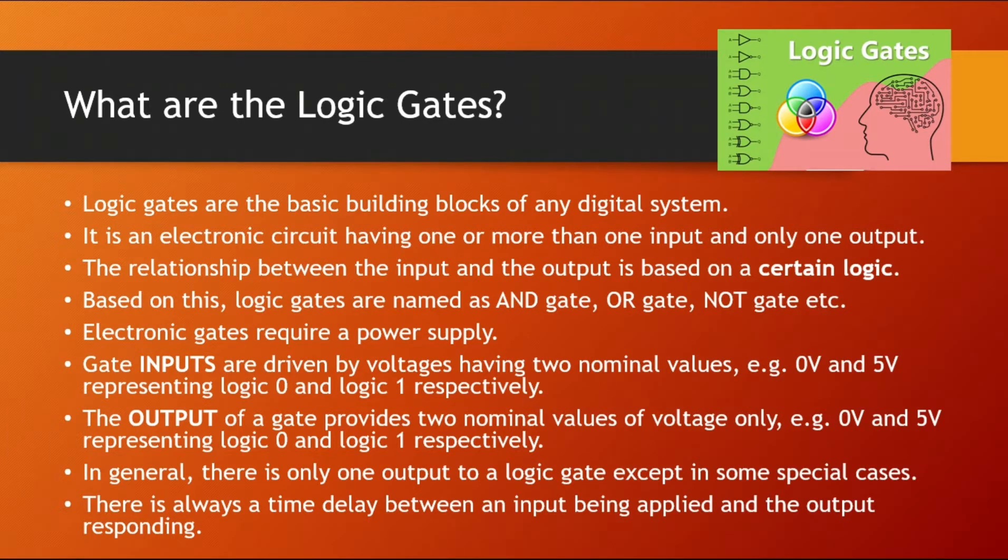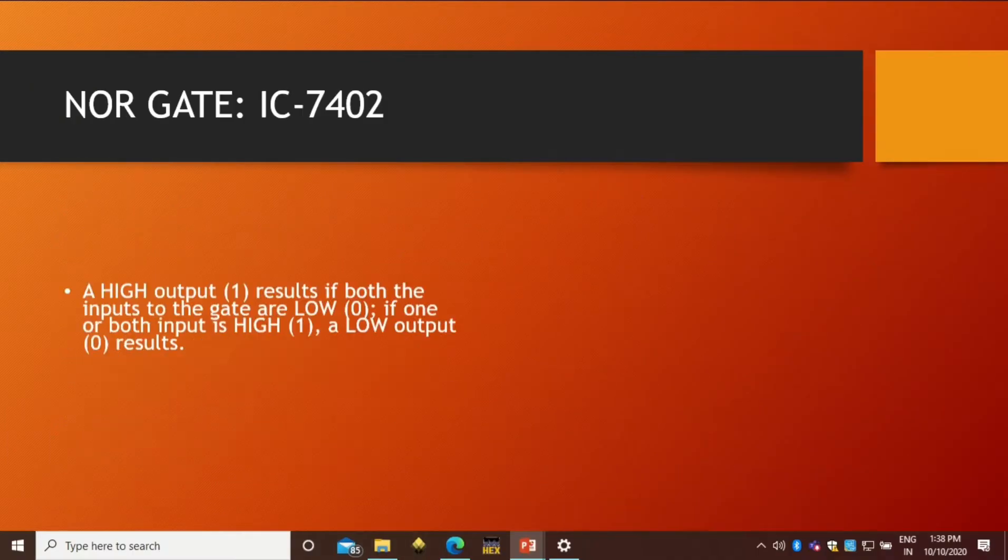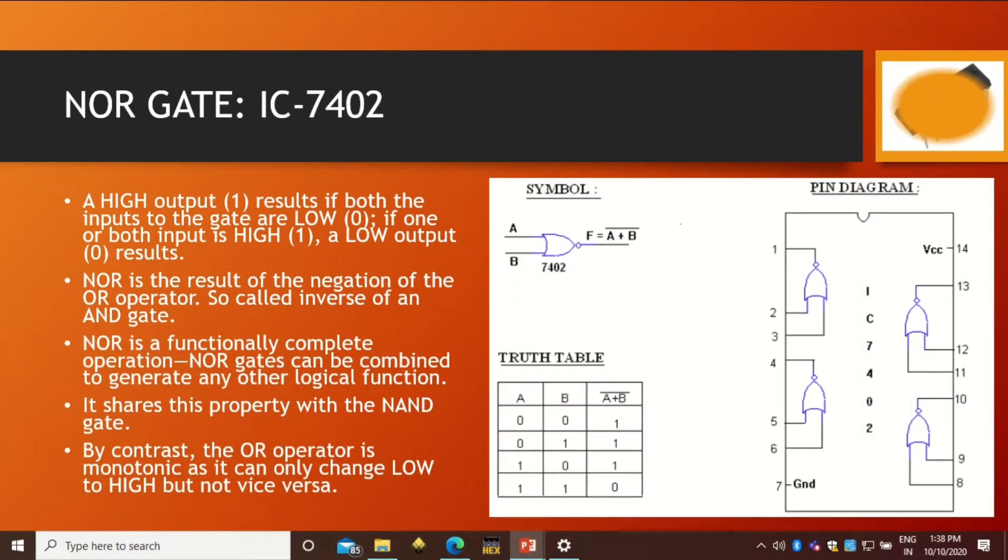This is how the logic gates can be studied. The next gate is NOR gate, which IC number is IC7402. This NOR gate is again the combination of two basic gates and that is NOT gate and OR gate. NOR gate is result of negation of the OR operator. We have already seen that how OR gate works. This OR gate will be inverted by this NOT, which is connected after OR gate.